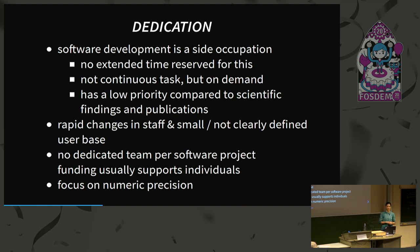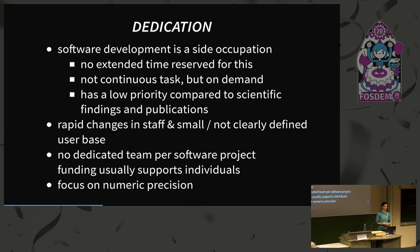The quick turnover of people in scientific labs also makes it difficult. People are not educated in software development from university, so whoever comes to your lab needs to be trained in best practices, but then typically they leave already. There's also no dedicated team developing a certain piece of software — it's many scientific projects, and whoever has overlap with a particular software might contribute a tiny bit, but it's not a defined team. And maybe a difference from business software is that in science, numerical precision is a highly valued aspect.